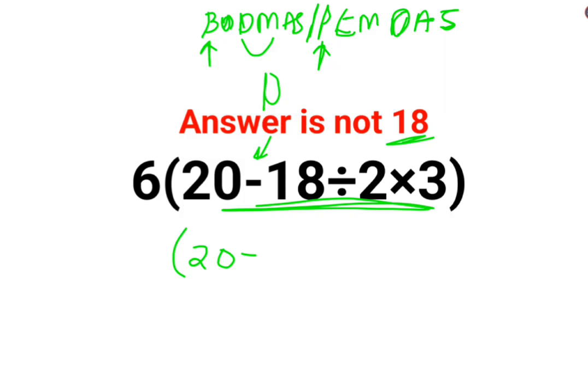Here people think that division holds higher precedence than multiplication, and here people think multiplication holds higher precedence than division. Now please understand, actually division and multiplication are equal in priority.